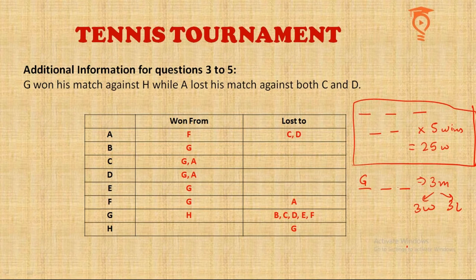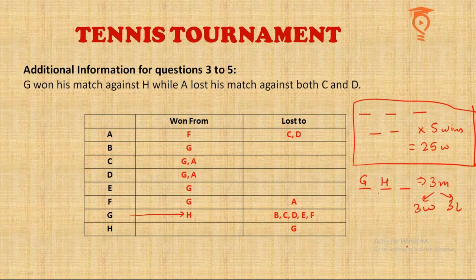G wins from H — this is clearly written. From this one fact, we know that these three players only beat each other among themselves, and none of them can be in the winners category. This means H does not belong to the winners category, because G beat H, so H cannot be a winner. So we have two confirmed losers: G and H. We now need to identify the third.